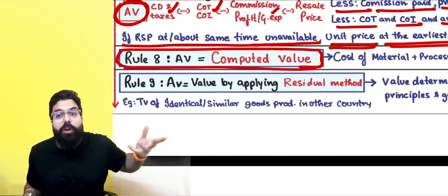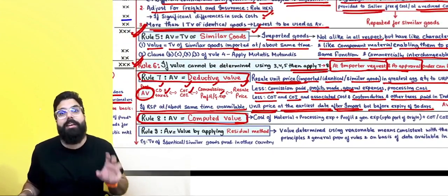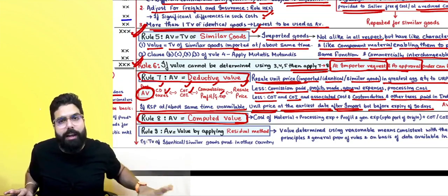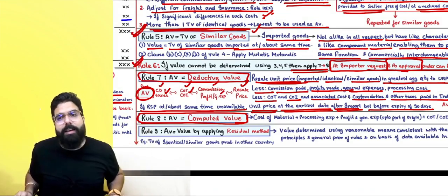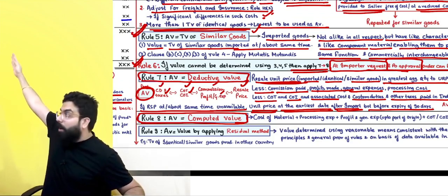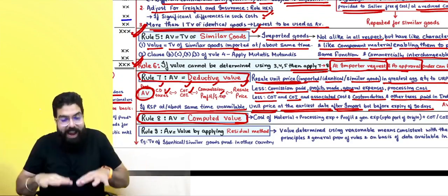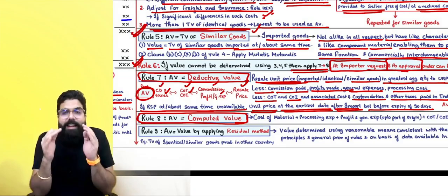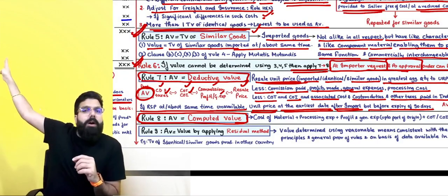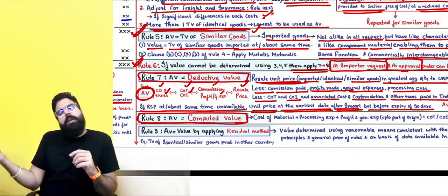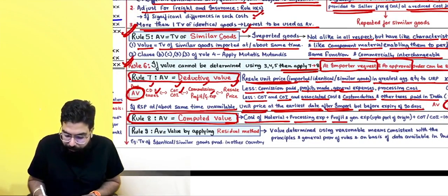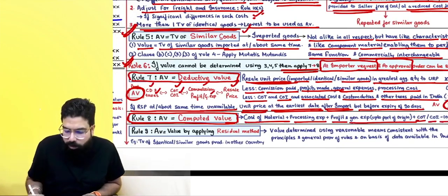Rule 8 says the assessable value is the computed value. For example, if your parent company gave you goods that are not being sold in India anywhere, Rule 7 can't be applied. Rule 8 says: take their cost of material, processing expense, profit, general expenses, cost of transportation up to the port, and cost of insurance — and you arrive at the Indian port value. So: cost of material + processing cost + profit + general expenses up to the port of origin + transportation + insurance, adjusted under Rule 10.